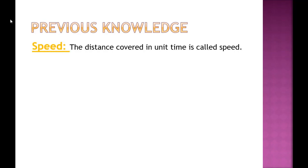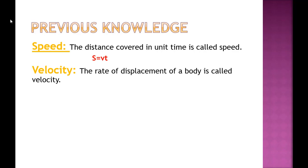First, we are going to discuss some previous knowledge. In last lecture, you discussed speed. The distance covered in unit time is called speed, and the formula of speed is s is equal to v multiplied by t. You also discussed velocity. The rate of displacement of a body is called its velocity, and the formula of velocity is v is equal to d divided by t, where v is for velocity, d is for displacement, and t is for time.